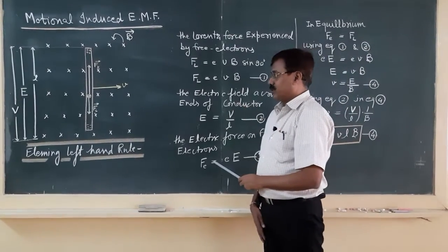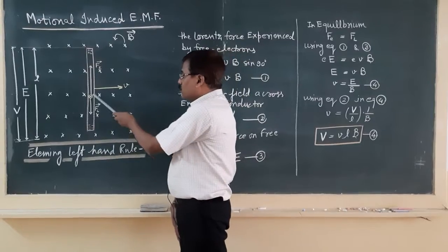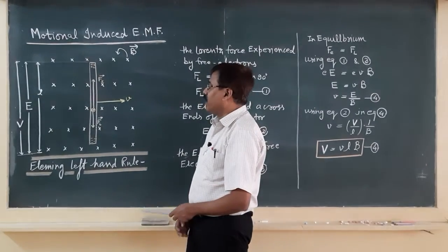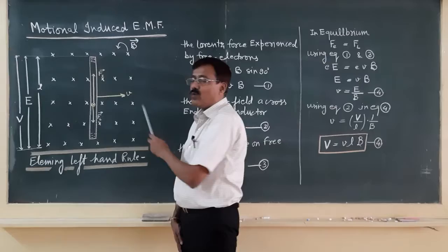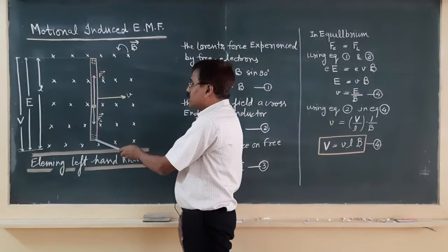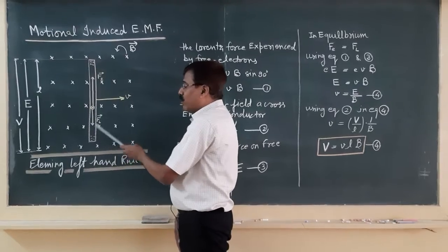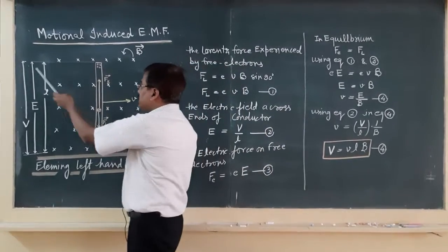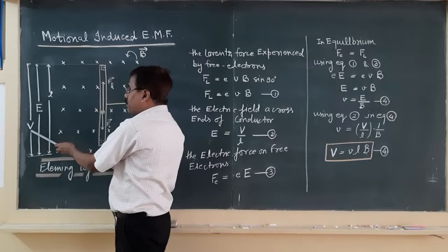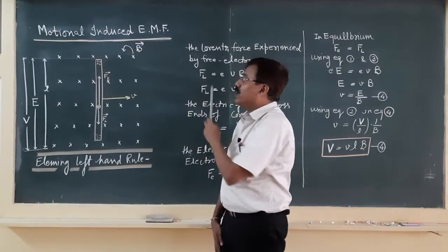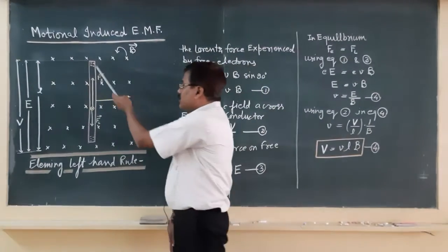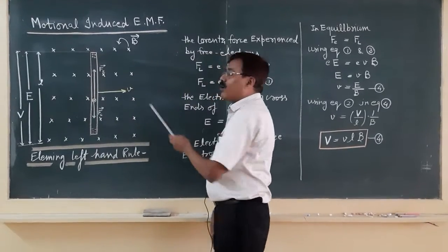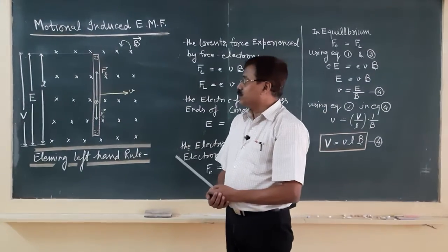Due to this Lorentz force, all the electrons start moving towards the down end according to Fleming's left hand rule. If you apply Fleming's left hand rule, the electrons start moving downward in the direction of the Lorentz force. It means the lower end becomes electron rich region, upper end becomes electron deficient region, and due to this there is establishment of a potential difference capital V. This potential difference is called Motional Induced EMF, and due to this potential difference there will be an electric field E. It means every electron is also in the electric field due to the Motional Induced EMF.